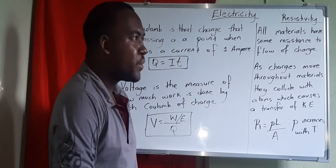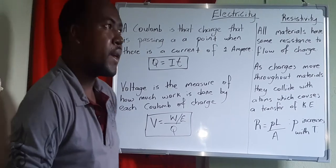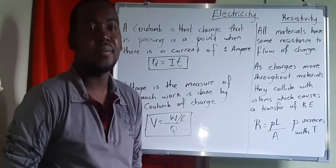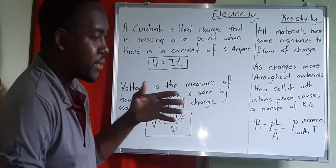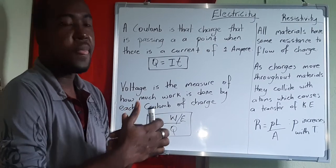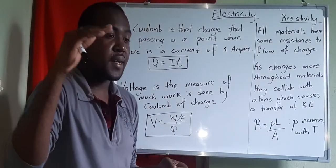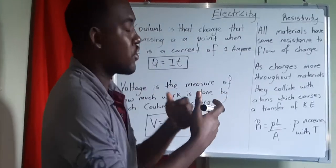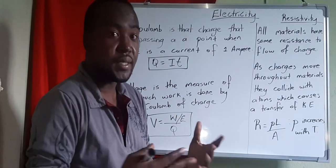When charges move within materials, remember all materials are made up of atoms. So if a negative electron moves through to produce electricity, it will come into contact with some of those atoms, causing a shift in direction and slowing down the charge. This slowing down is normally known as resistance.